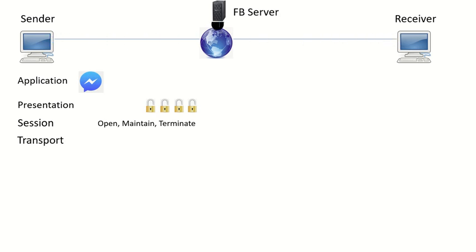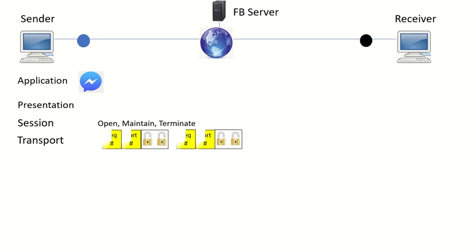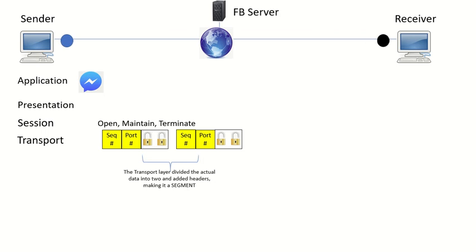After the Presentation Layer, your actual data gets forwarded to the Transport Layer. The Transport Layer is responsible for how large a block of information is going to be sent over the network. The actual data is divided into two pieces. It is at this layer where encapsulation first happens. Encapsulation simply means adding headers or trailers. After encapsulation, the data is now called segments.